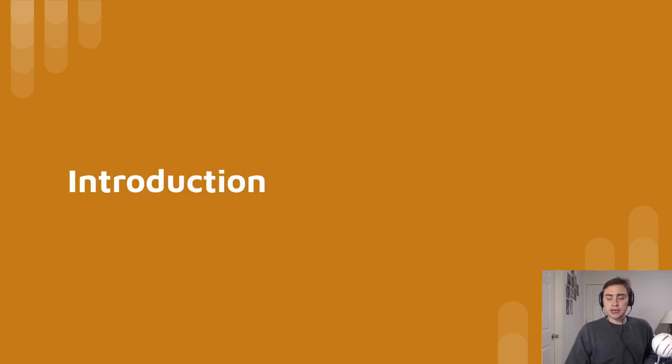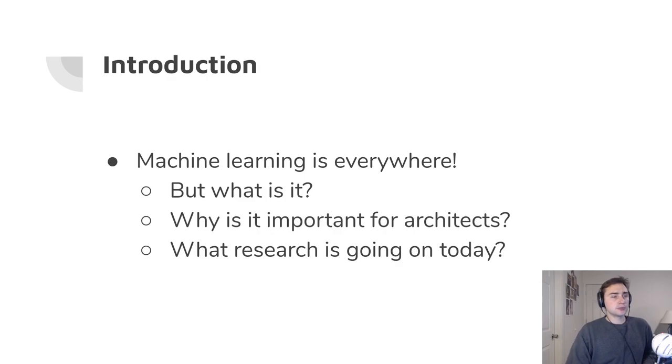So what are we going to be covering in this series? Across this series we're going to be looking at machine learning is everywhere, but first of all, what is it? We're going to give some background on why is it important for computer architects today? And then where is the research going? What has been done? What are people looking at now? And what are some problems that are still outstanding in the field?